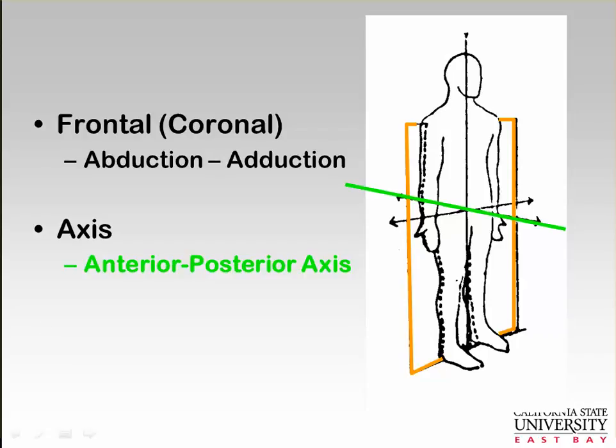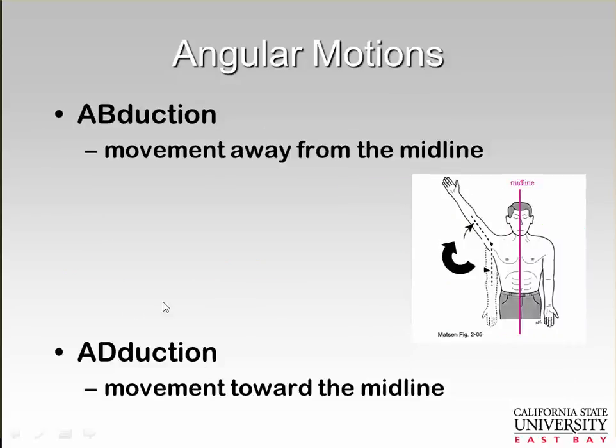The axis about which abduction and adduction occur is through the anterior-posterior axis. So this pole is piercing your body from the anterior side and leaving the posterior side.